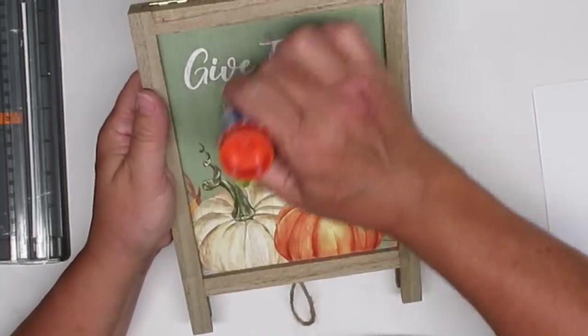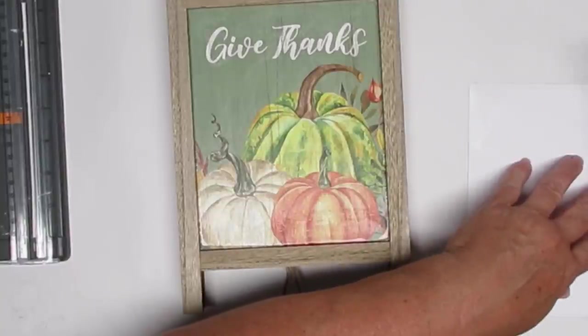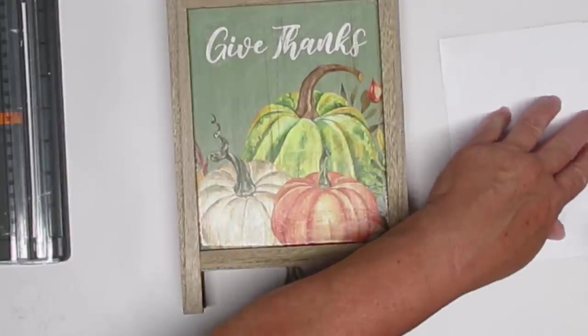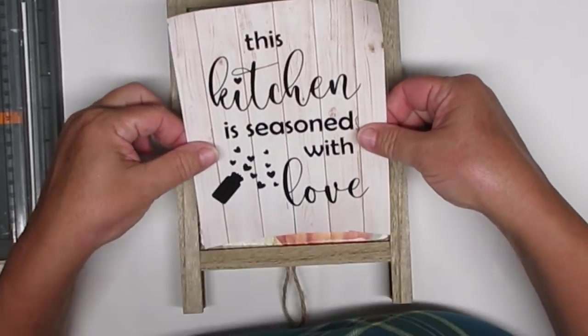I'm going to attach the paper onto the easel just using my glue stick. Just put a ton of glue on there make sure that every area is covered. I'm just going over to the paper to make sure I get the corners and then I'm just going to place it in and smooth it down.